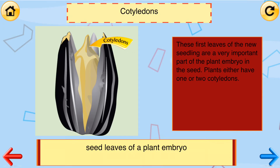These first leaves of the new seedling are a very important part of the plant embryo in the seed. Plants either have one or two cotyledons.